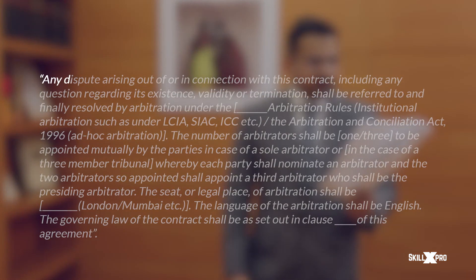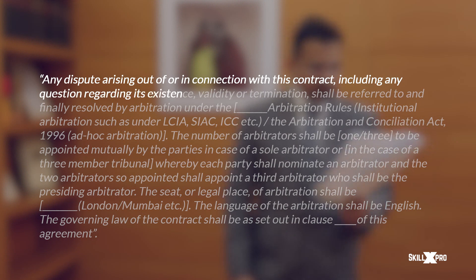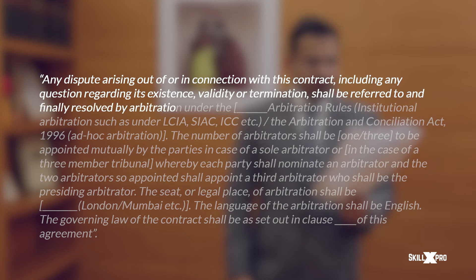This is a model arbitration clause — this is how it normally should read to avoid confusion and delay. It reads: 'Any dispute arising out of or in connection with this contract, including any question regarding its existence, validity, or termination, shall be referred to and finally resolved by arbitration under [dash] rules.' You can name the institution here.